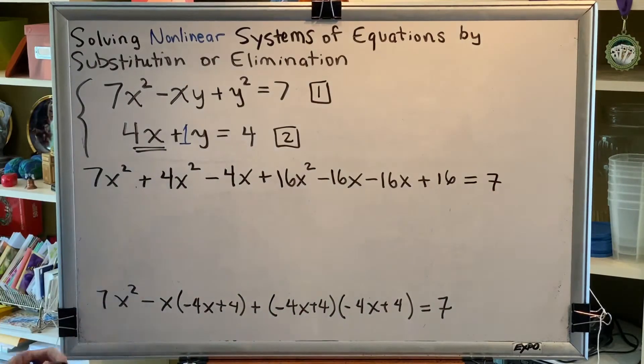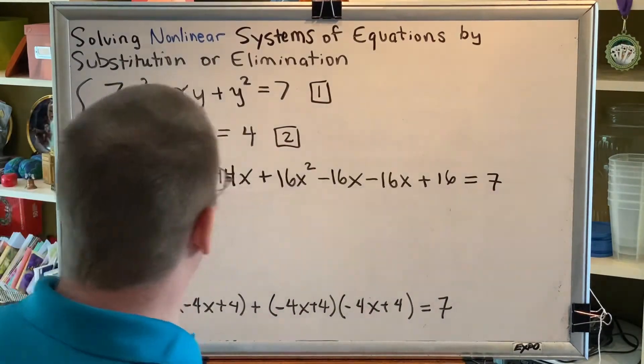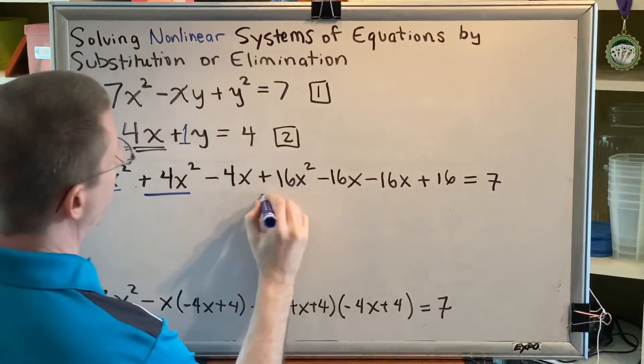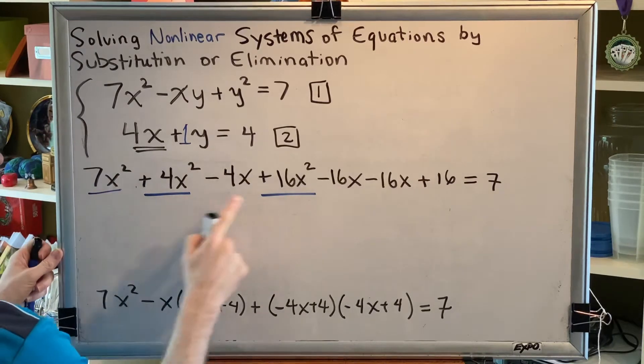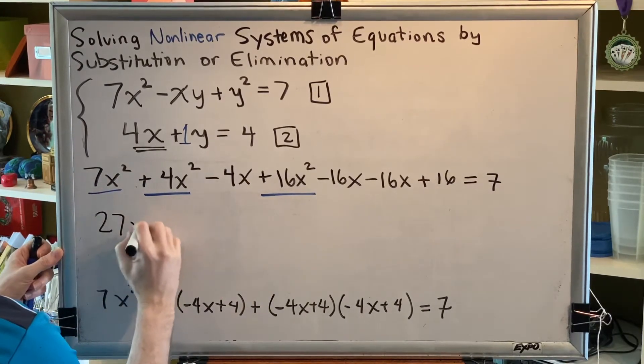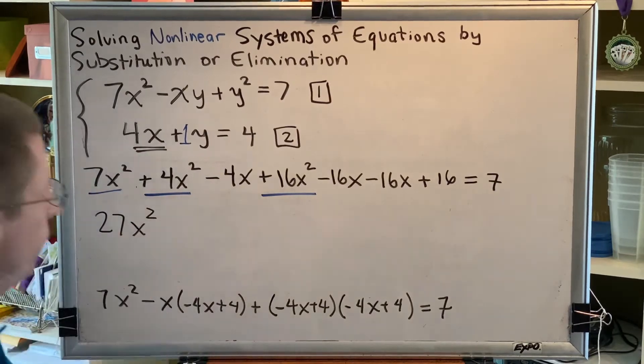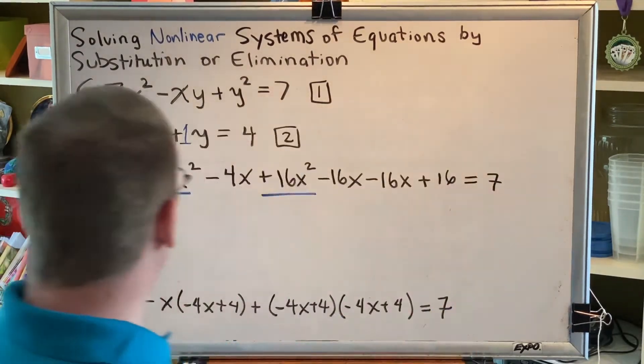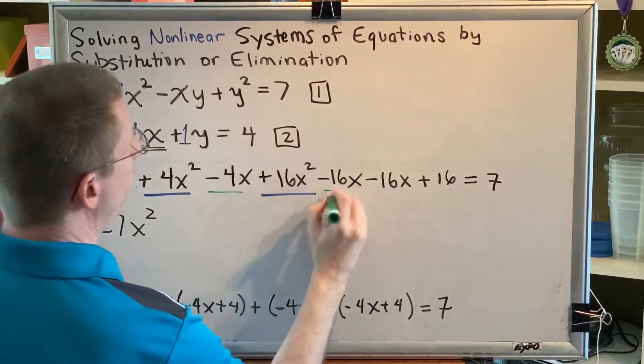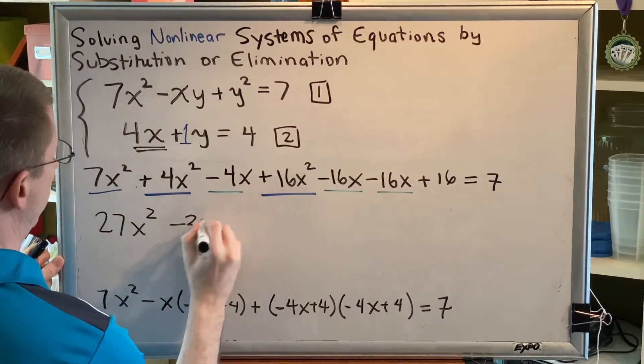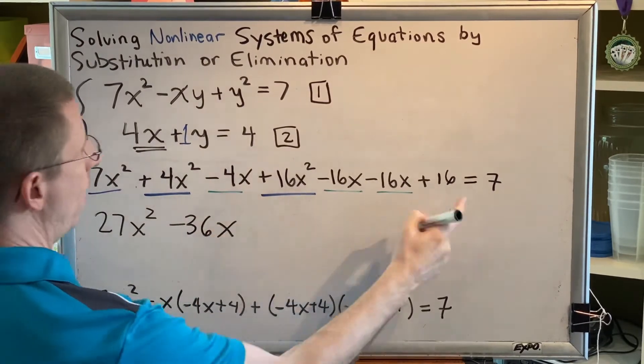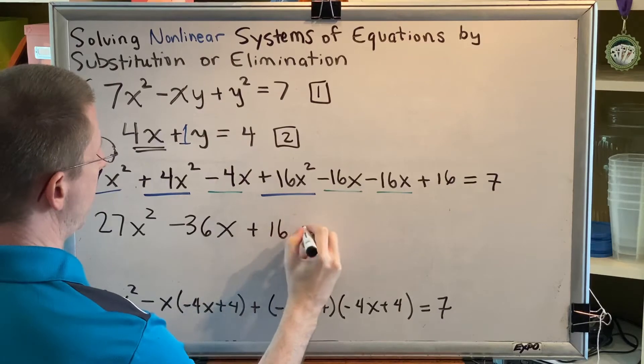So we've got some like terms to combine. Let's see if we can identify what those are. 7x squared, 4x squared, 16x squared. All of those are going to be combined. Let's add the coefficients. 7 and 4 is 11, plus 16 is 27. So we have 27x squared. Then our terms that just have x. So minus 4, minus 16, minus another 16. That results in minus 36x. And then the rest. Plus 16 equals 7.